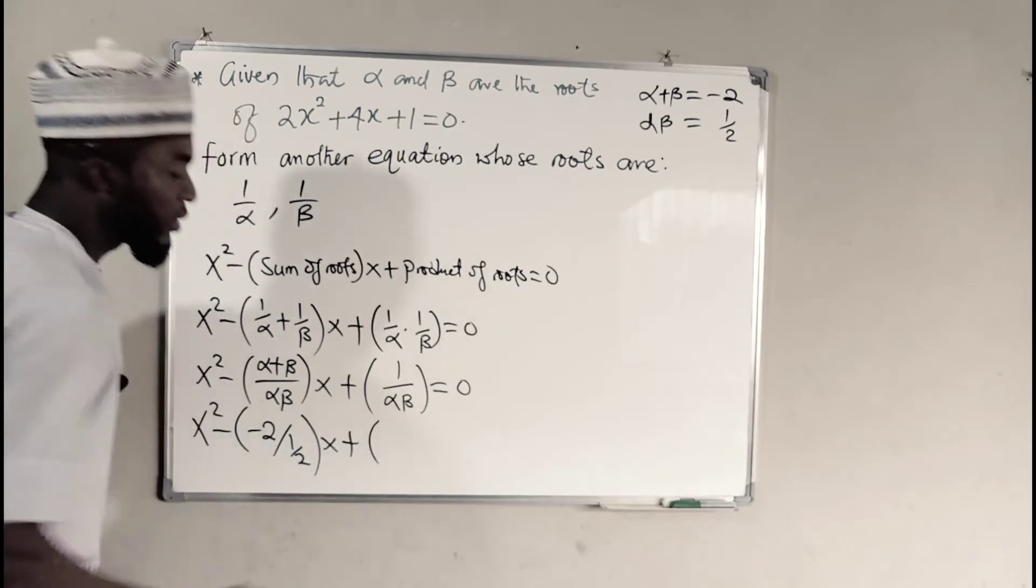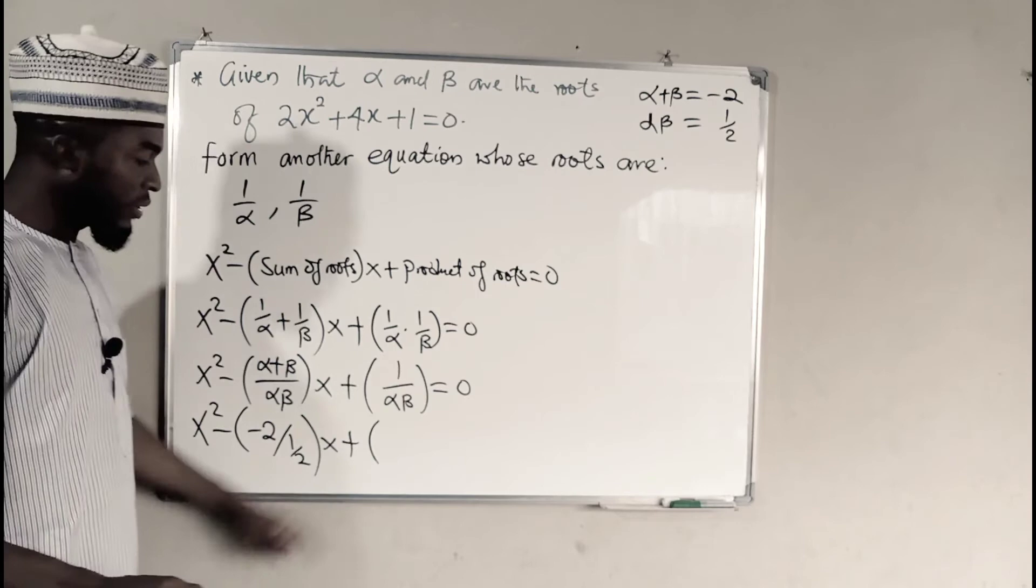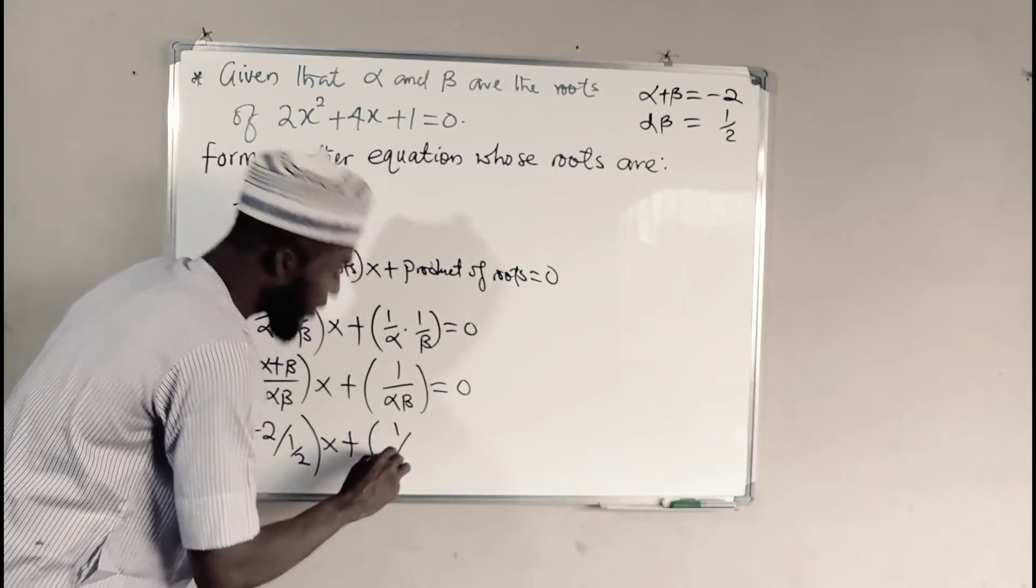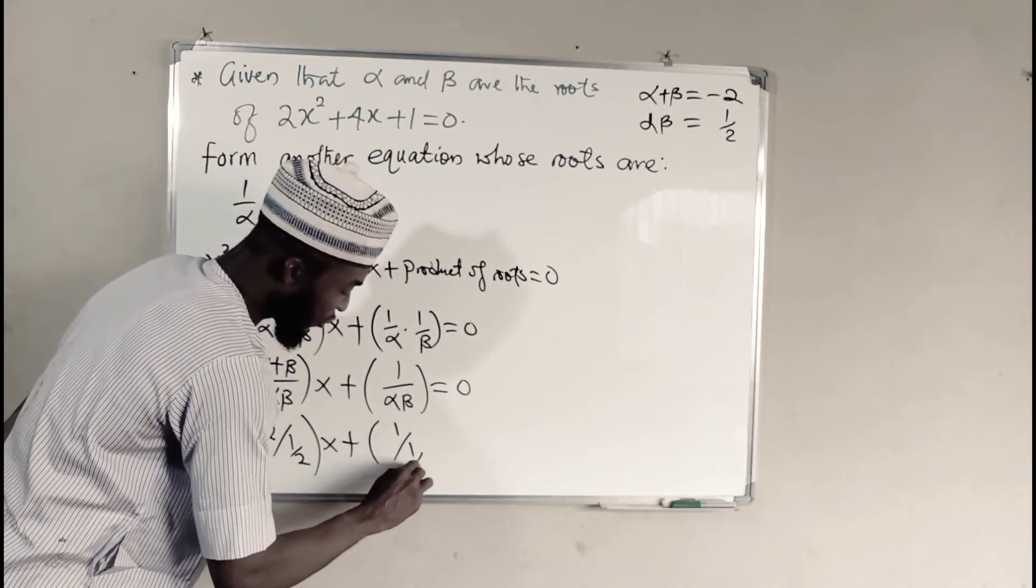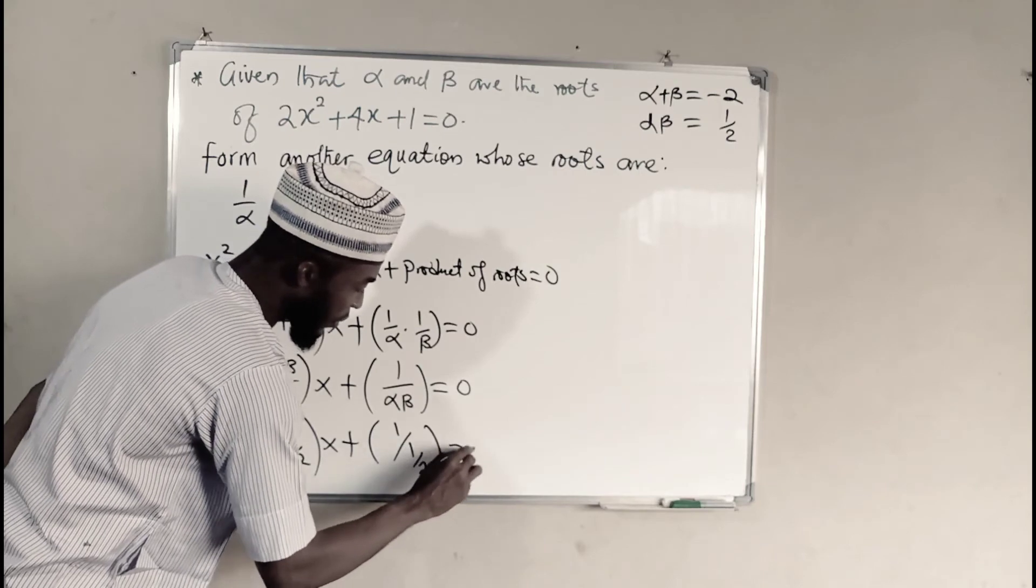Plus, then 1 over the product. We have 1 over the product is also 1 over 2. All equal to 0.